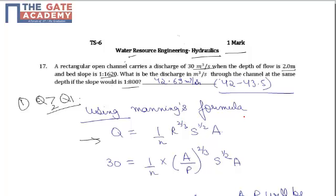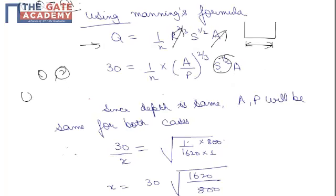Since it is given that depth is the same and width is the same, as a result various hydraulic properties—that is, area A and hydraulic radius R—will remain the same for both cases. So it will only depend upon slope. Therefore, we can write Q1/Q2 = (S1/S2)^(1/2).